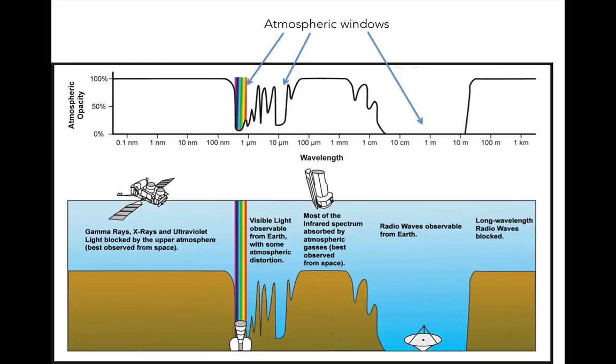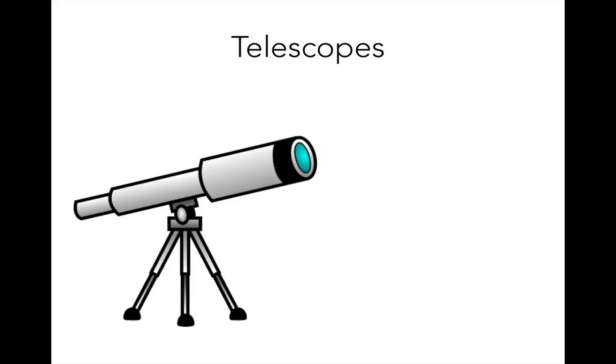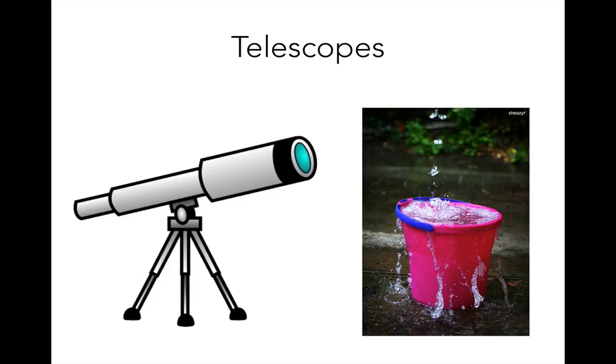As an aside, even in the atmospheric windows, the Earth's atmosphere can have a blurring effect, so we actually send some visible light or optical telescopes to space as well, so that they're beyond the atmosphere and can take clearer pictures. It's worth taking a few minutes now to talk about telescopes. A telescope is, in its most basic sense, a light bucket. It collects photons of light just like a bucket collects rainwater.